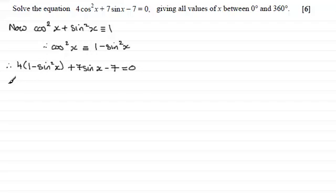And if we do that, we get 4 minus 4 sine squared x, and then plus 7 sine x minus 7, and that equals 0.